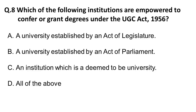The next question: which of the following institutions are empowered to confer or grant degrees under the UGC Act of 1956? The options are: a university established by an act of legislature, a university established by an Act of Parliament (central university), and an institution deemed to be a university. All of the above is the correct answer, because all state universities, central universities, and private universities are empowered to confer degrees to students.